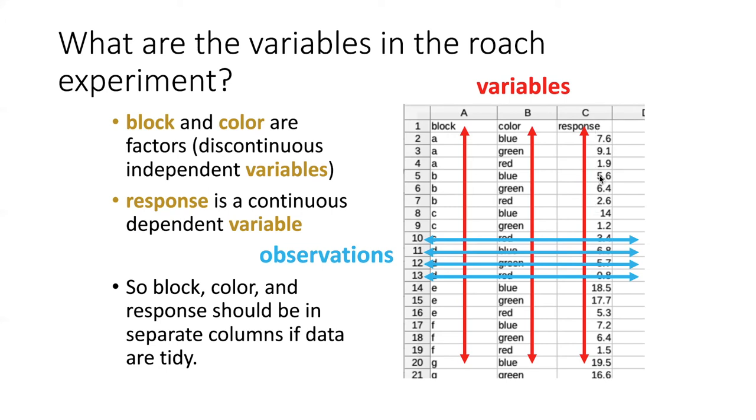You can see that each of the observations I make represents a combination of these three variables. So you have a combination of a block, which is a particular cockroach in a particular box, and a color, and then the response for that cockroach and that color. Then here's the same box but with a different color, and here's the response. Here's the same box with red, and here's another response.